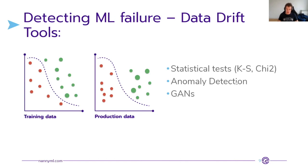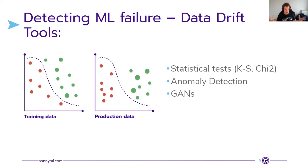The most advanced way to detect data drift is using generative adversarial neural networks. Train the GAN on training data so it learns to mimic it, then use the discriminator part to see if new production data is significantly different from training data — capturing all dataset characteristics using a neural network. It's the most robust and efficient approach, but GANs are very hard to train and tend to get stuck in local minima.